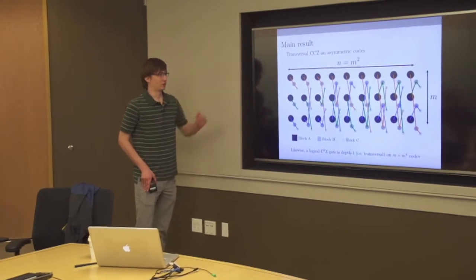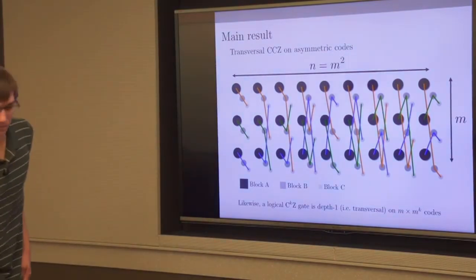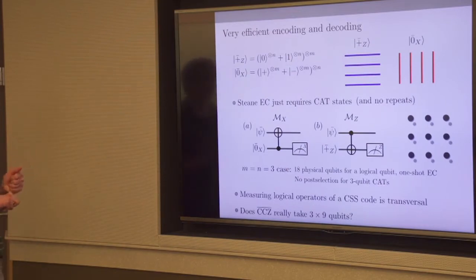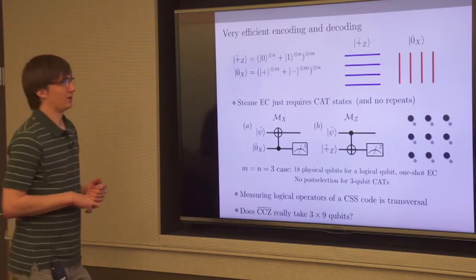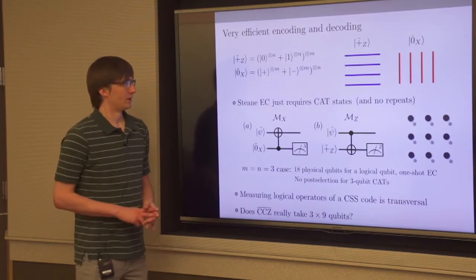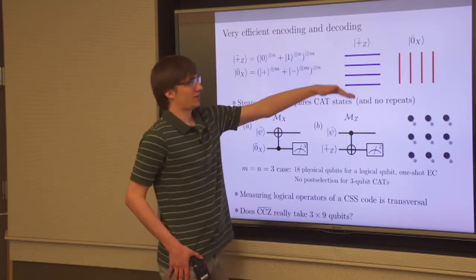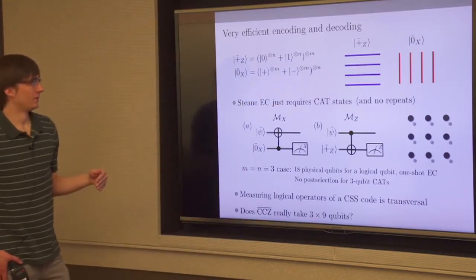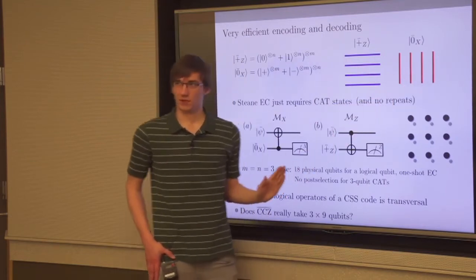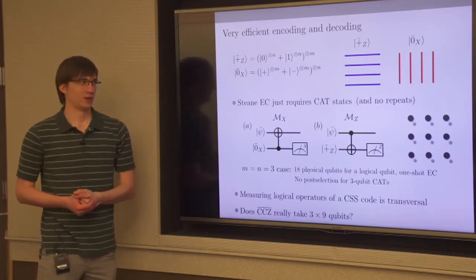For the CCZ gate, you derive the circuit the same way — you spread the controlled-controlled-Z gates out. So we have a procedure for CCZ, and we can also teleport in Hadamard. The remaining parts of computing with the Bacon-Shor code are encoding and error correction. Encoding is relatively simple: if you want to prepare |+⟩ in the Z gauge, prepare m cat states each of length n; if you want to prepare |0⟩ in the X gauge, prepare n cat states each of length m along the columns. These logical encoded states are just tensor products of cat states.